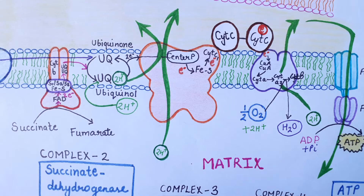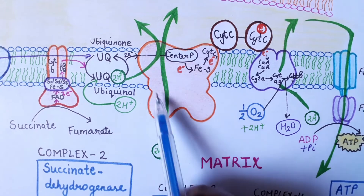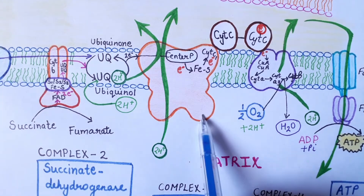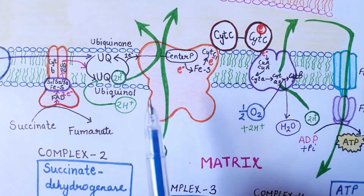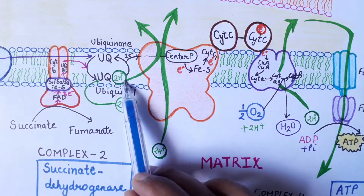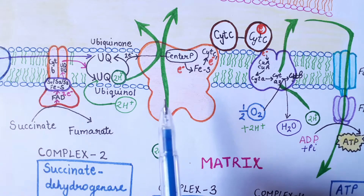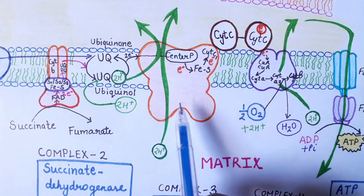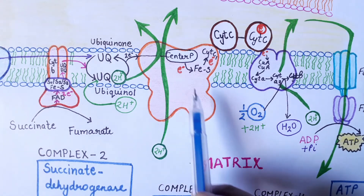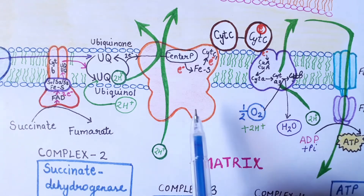Hello everyone, welcome to my channel all about biology. Today we are going to discuss the Q cycle. The Q cycle basically takes place within complex III of the electron transport chain, and it involves the transfer of electrons from ubiquinol to cytochrome C.